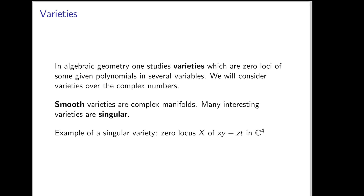An example of a singular variety to keep in mind for this talk is as follows: we take the affine four-dimensional space with coordinates x, y, z, and t, and we look at the zero locus of the equation xy minus zt. This will have a unique singularity at the origin, which will be a cone over a projective surface.